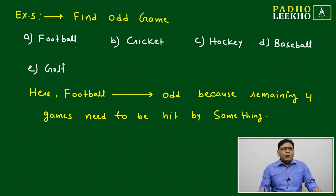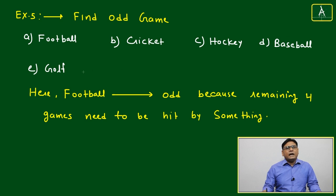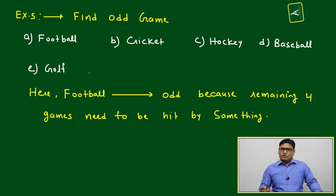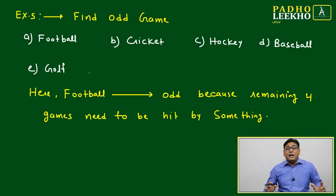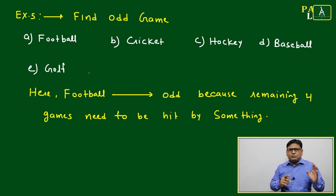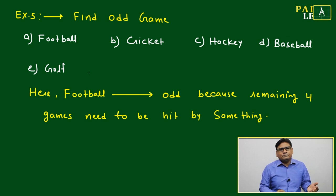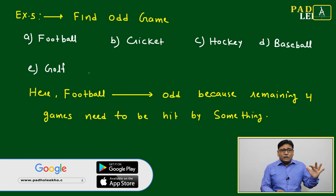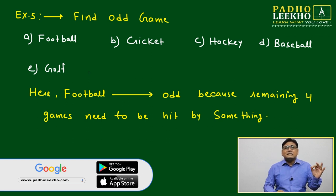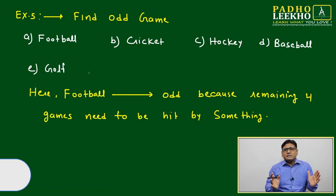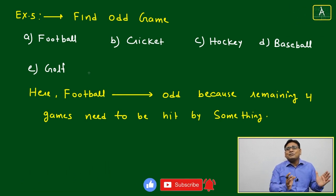The games given are football, cricket, hockey, baseball, and golf — all are outdoor games. So one classification is done: all are outdoor. If suppose four were outdoor and one was indoor, like carom, you'd simply mark carom as the odd one. But here all are outdoor, so we must classify at the next level among outdoor games.